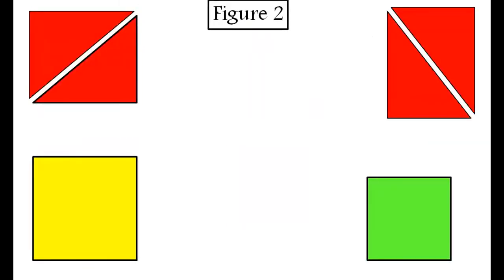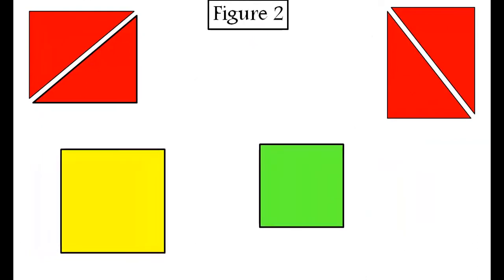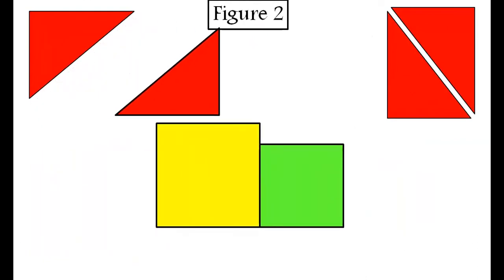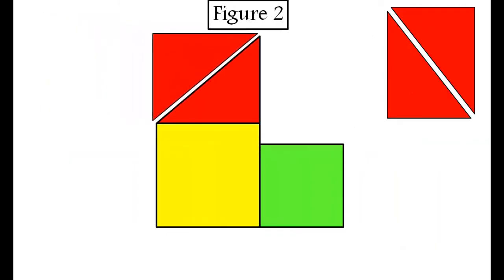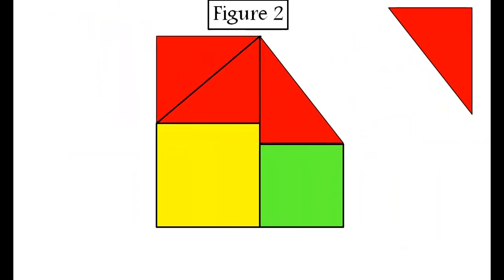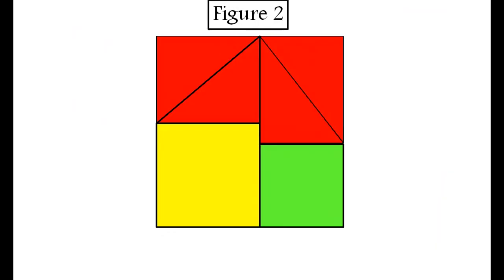Now, we will arrange these squares and triangles in such a way that we get a bigger square. Notice, the side of the square which comes as a plus b units.